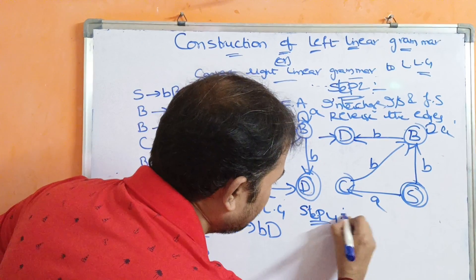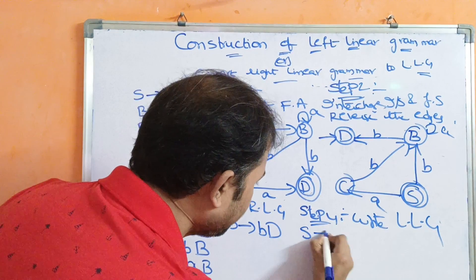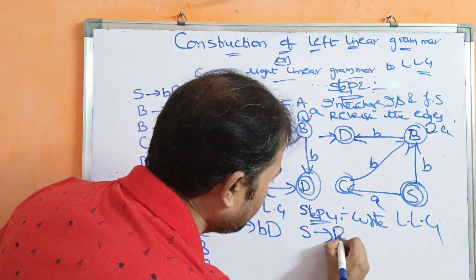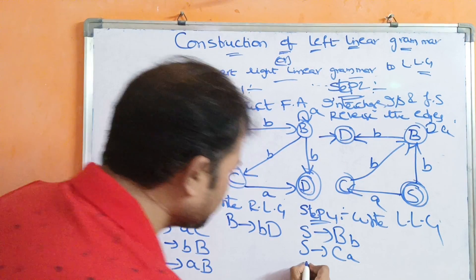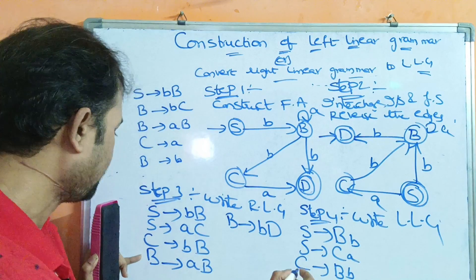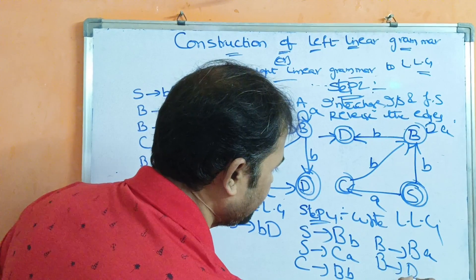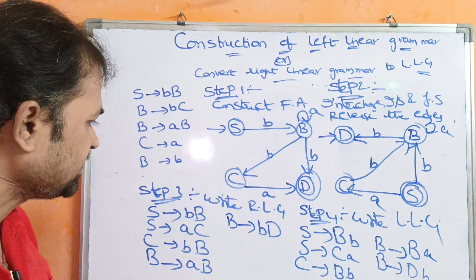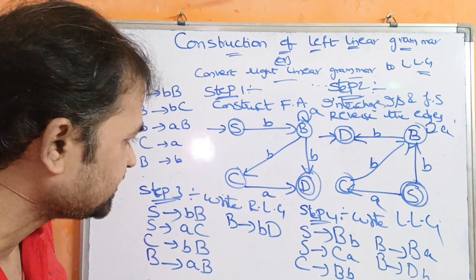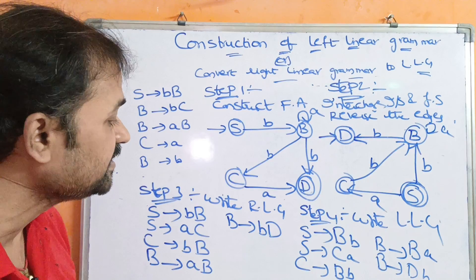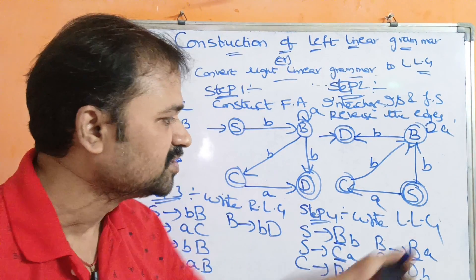Step 4 is to write the left linear grammar by reversing the right-hand side of each production. S implies BB stays as S implies BB. S implies AC becomes S implies CA. C implies BB stays as C implies BB. B implies AB becomes B implies BA. B implies BD becomes B implies DB. Observing all productions, the leftmost symbol on the right-hand side is always a non-terminal, so this is the left linear grammar.